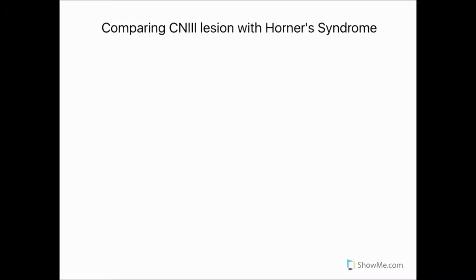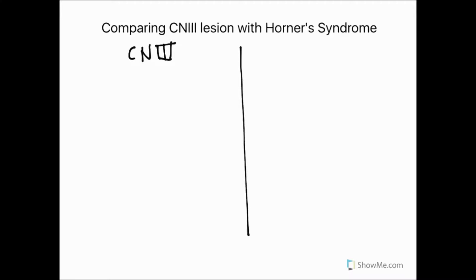We're going to finish off by drawing a table to compare a lesion of cranial nerve 3 with Horner's syndrome. We'll put a line down the middle with CN3 on one side and Horner's on the other.